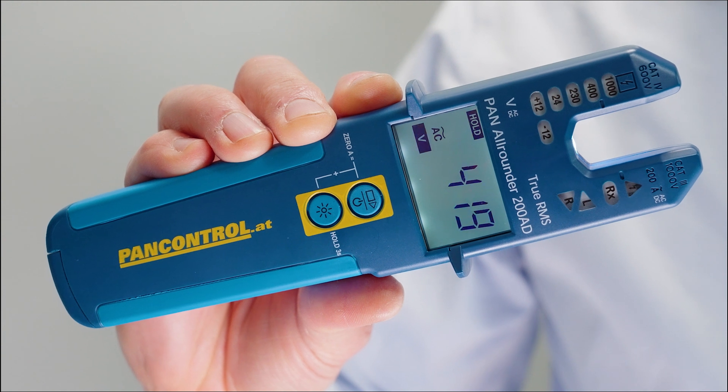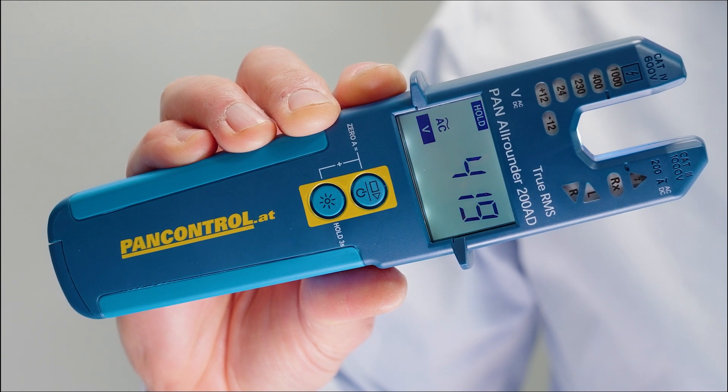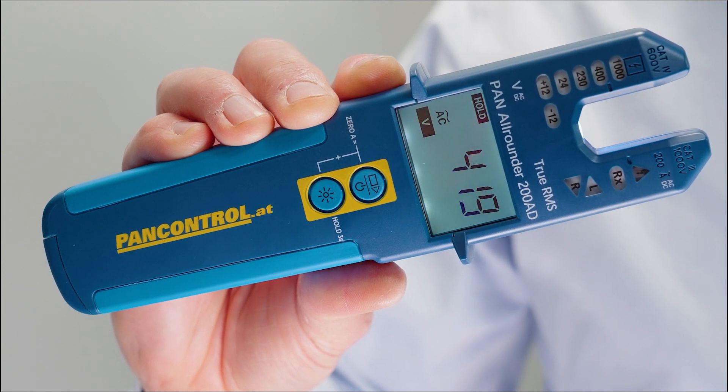All in one. This is our slogan for the new Pan Allrounder 200 AD. Easy to use like a voltage tester, versatile like a clamp multimeter.